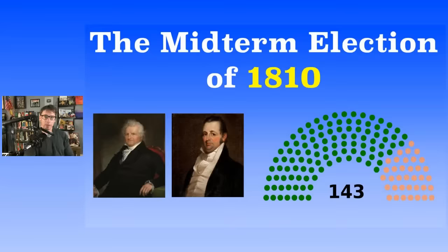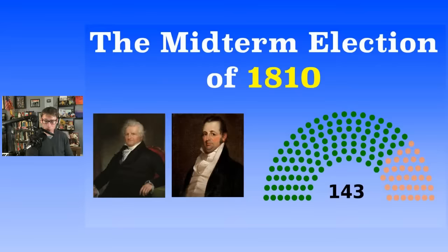Before the 1810 midterm elections, the Democratic-Republican Party had a pretty solid majority. In the Senate, there were 34 seats total; they had 26 — 26 out of 34. Federalists had 8. After the election in the Senate, it stayed the same. In the House of Representatives, the Democratic-Republicans gained 13 more seats.